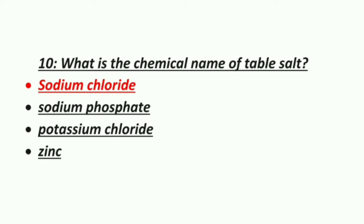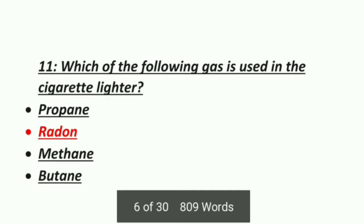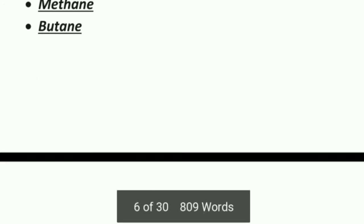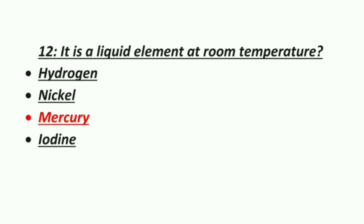The chemical name of table salt is sodium chloride, formula NaCl. Eleventh MCQ: which gas is used in a cigarette lighter? Option 1: Propane, Option 2: Radon, Option 3: Methane, Option 4: Butane. The answer given is radon — radon gas is used in the cigarette lighter.